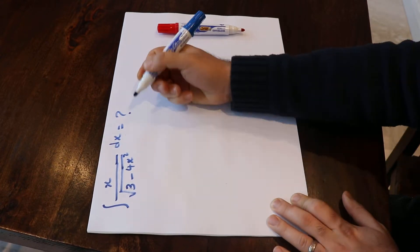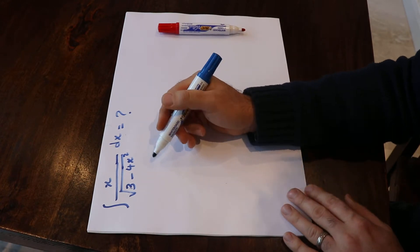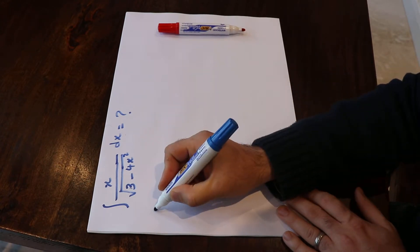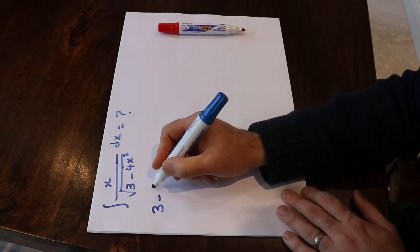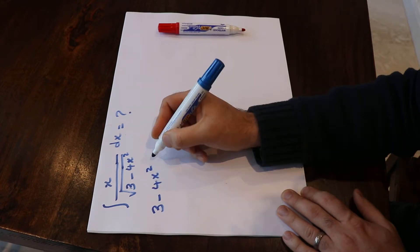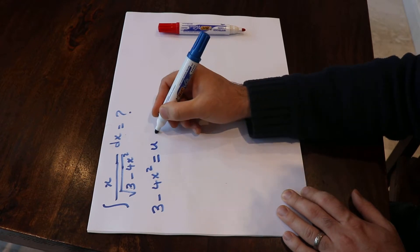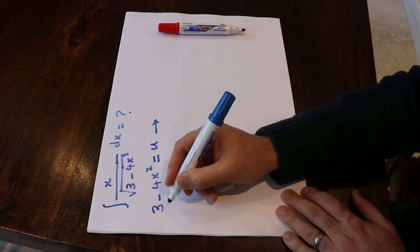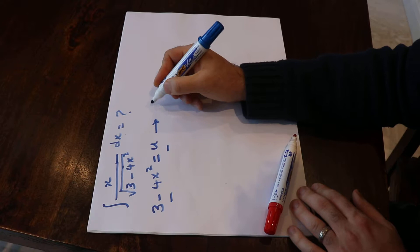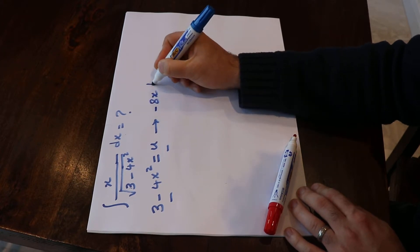To solve this integral you need to use a substitution rule. Instead of 3 minus 4x², I represent that by u. So if you take the derivative from each side of this equality, you get minus 8x dx.